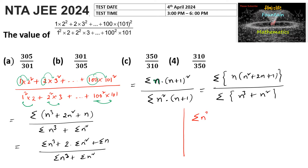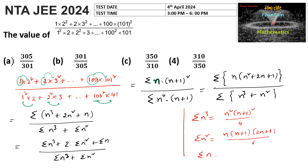Let us recall: summation of n³ (sum of cubes of first n natural numbers) equals n²·(n+1)²/4, summation of n² equals n·(n+1)·(2n+1)/6, and summation of n equals n·(n+1)/2.